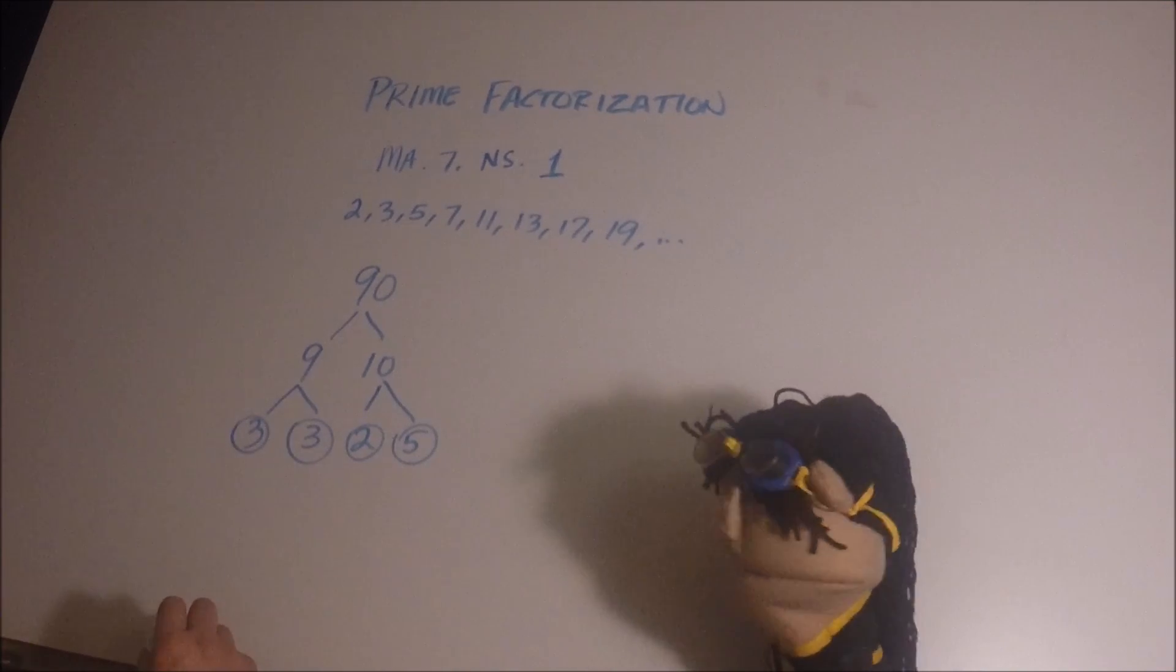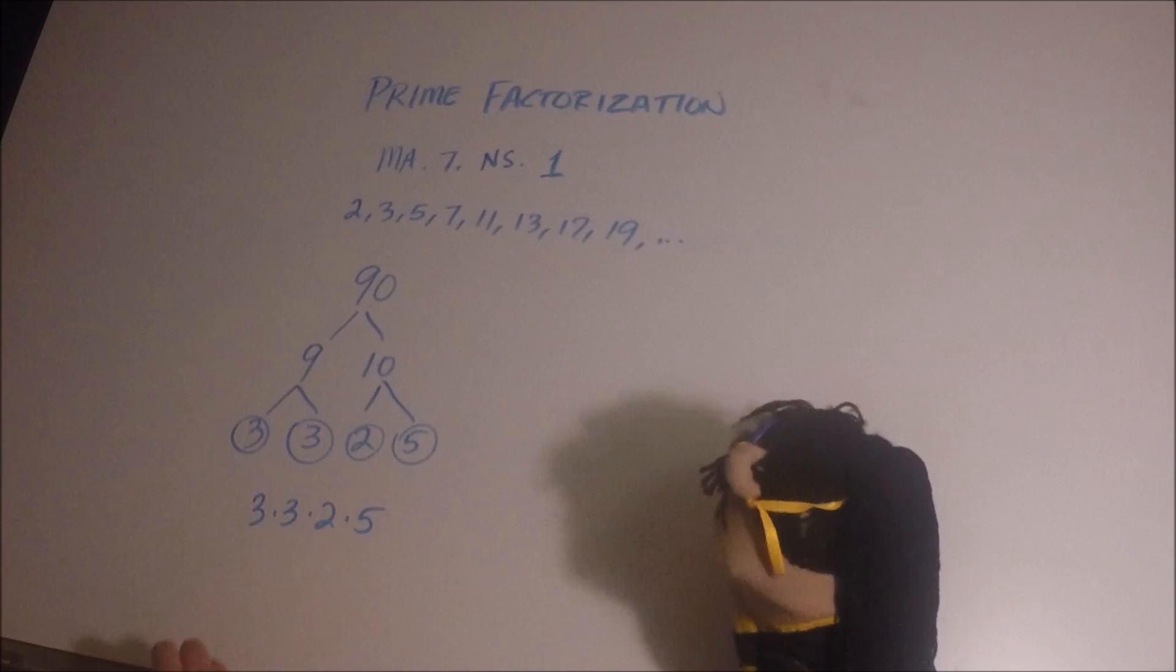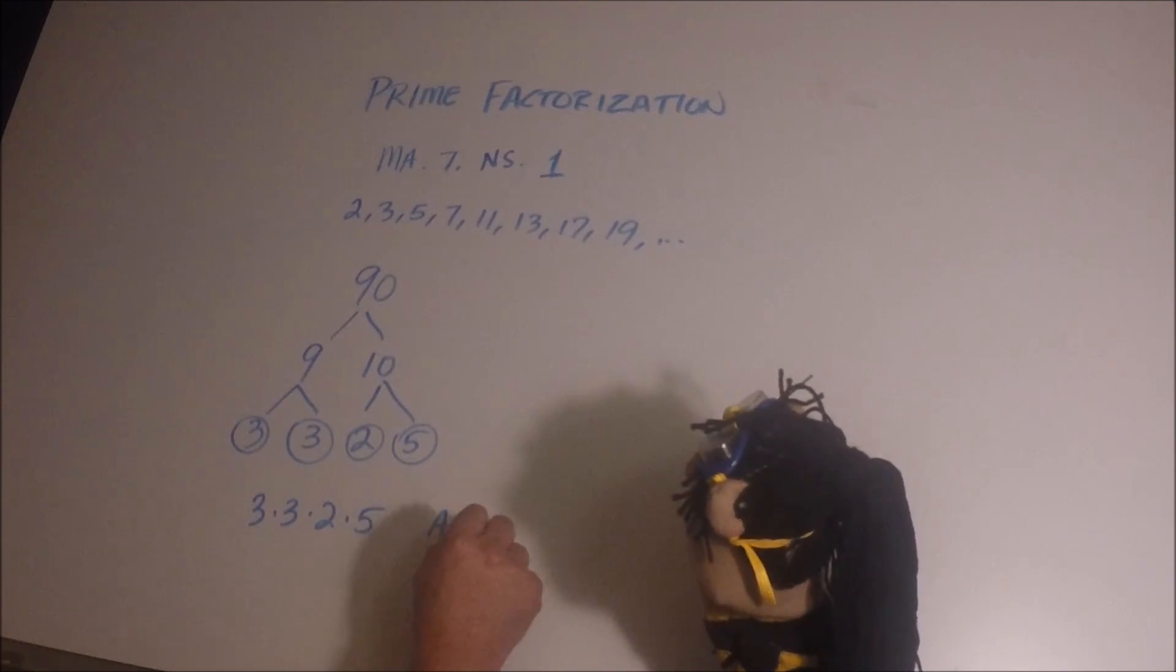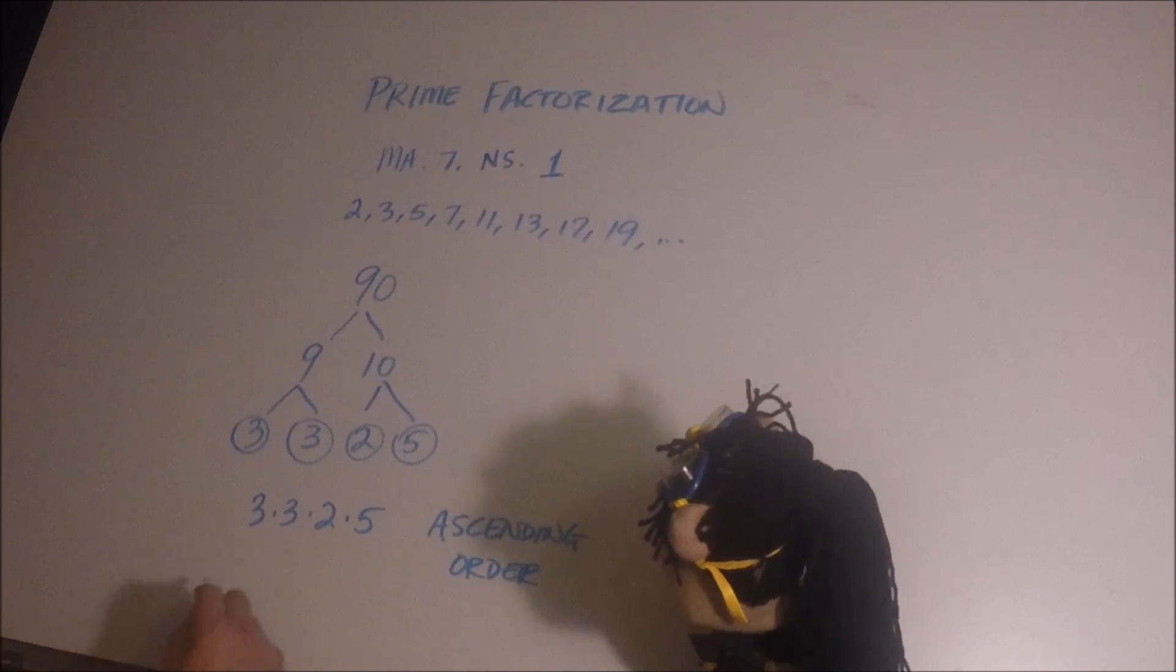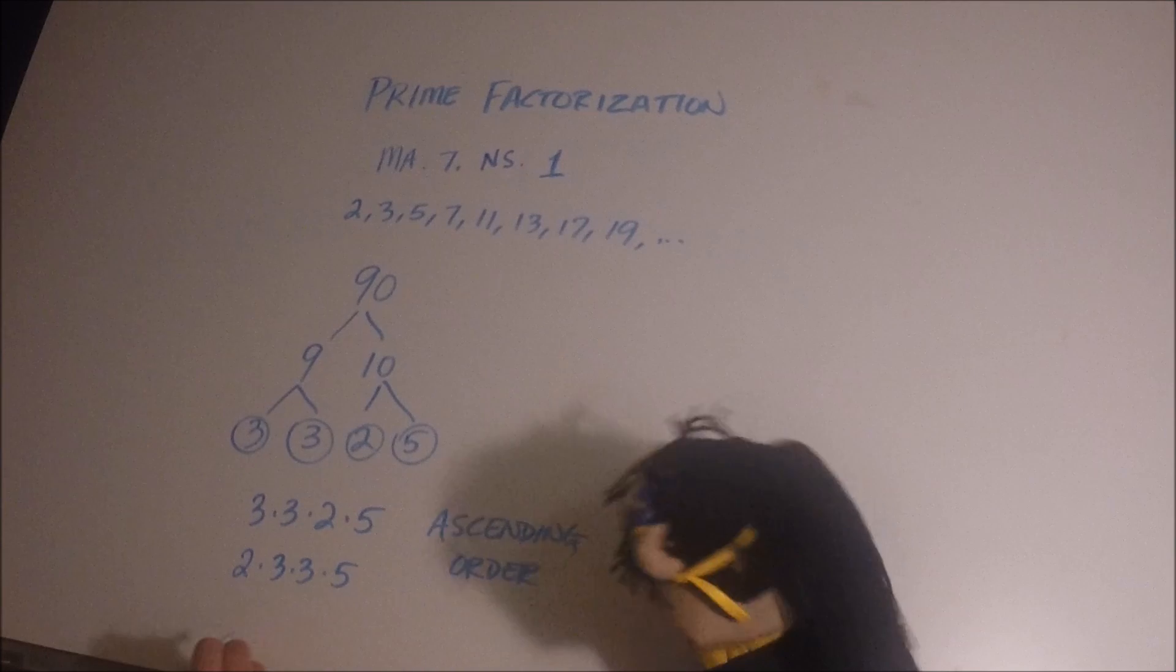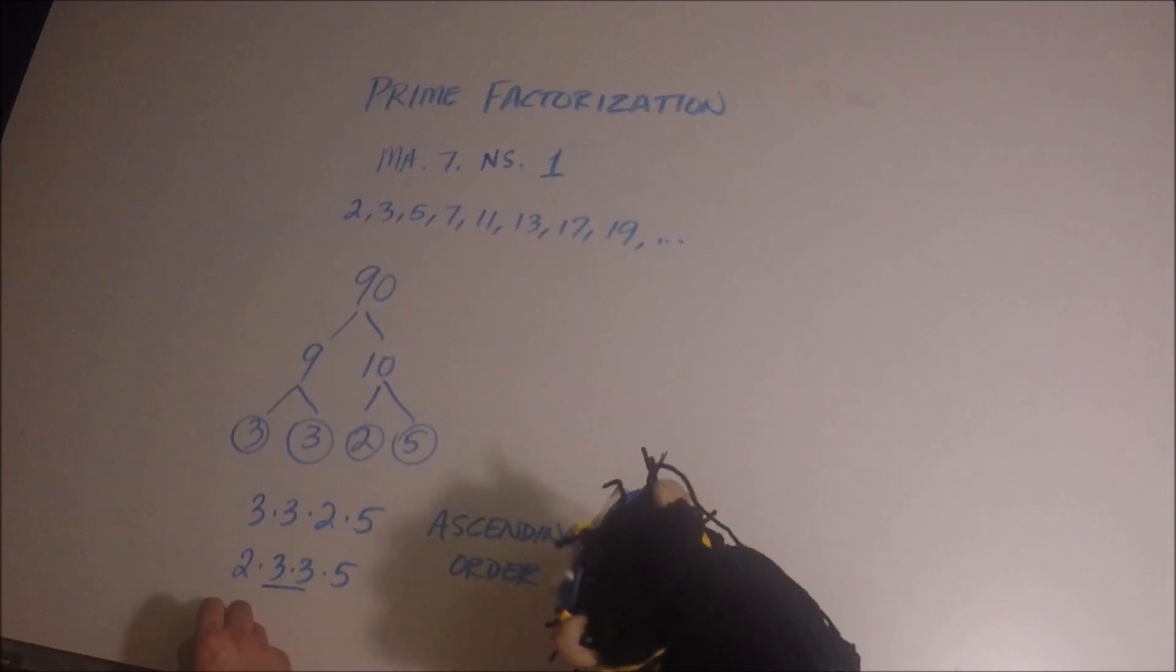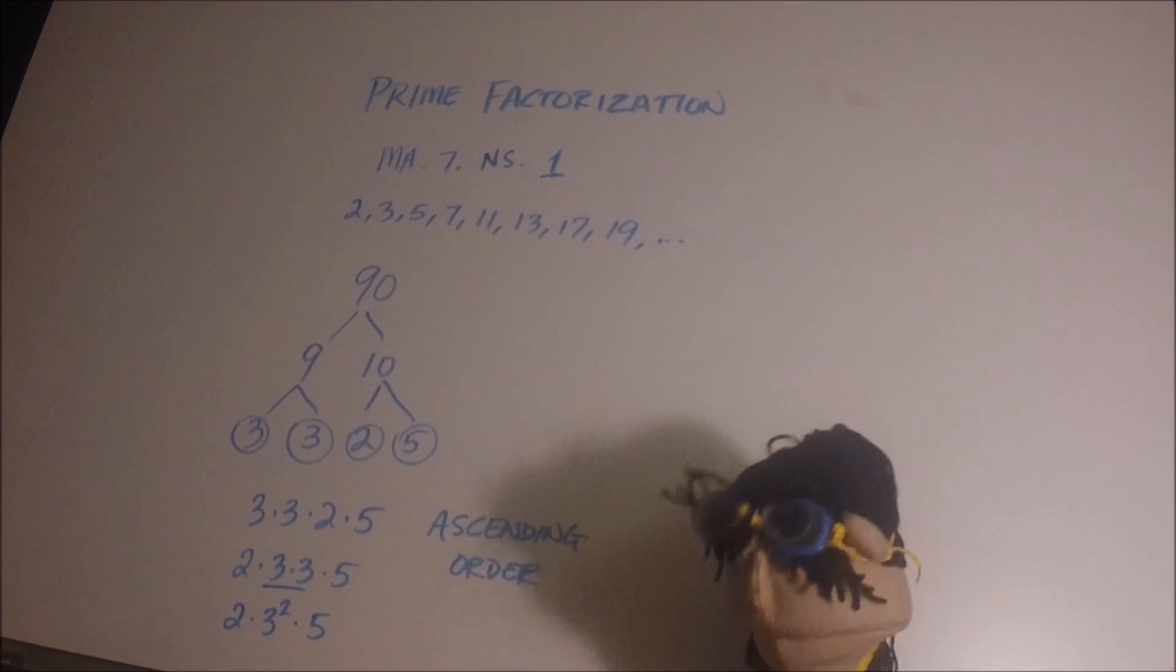So the prime factorization of 90 turns out to be 3 times 3 times 2 times 5. Now multiplication can be done in any order that we choose, but we like to write these in what's called ascending order. Just to make it easy for everybody to have the same answer, we're going to put them in ascending order which means it goes from least to greatest. So what's the smallest of these numbers? 2. So let's put 2 first and then 3 and 3, and then we'll put 5 last. So there they are in ascending order and we can actually simplify it a little bit more and use an exponent to describe two factors of 3. So that would be 2 times 3 to the second power times 5. And that is the prime factorization of 90.